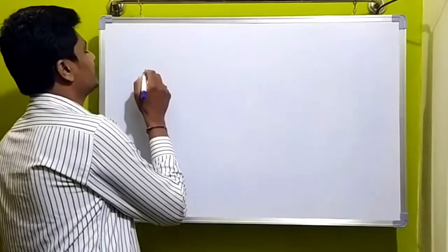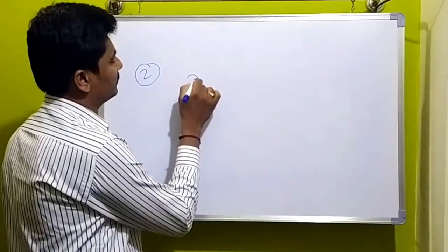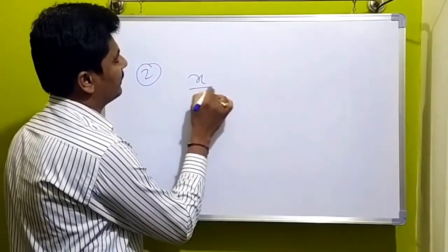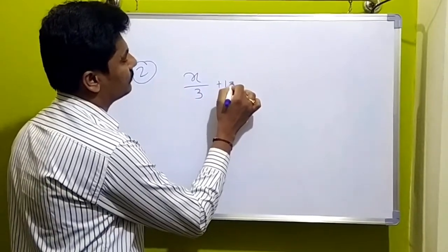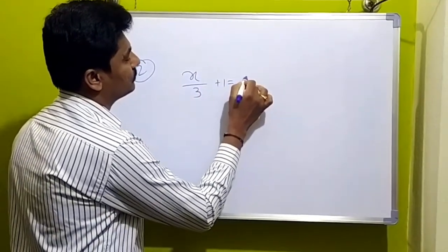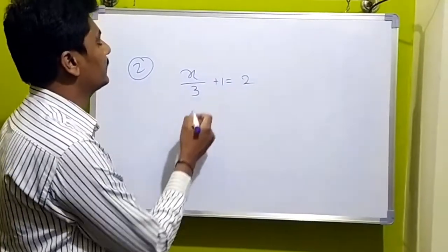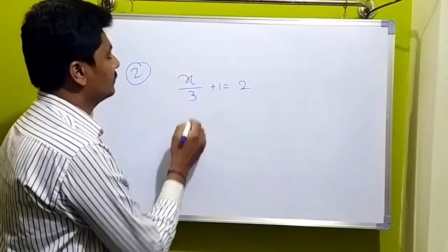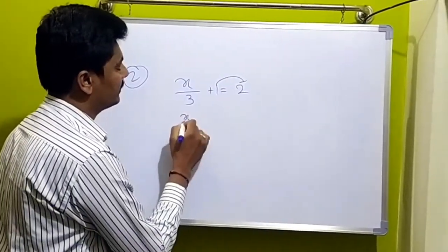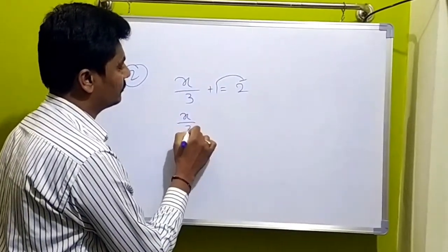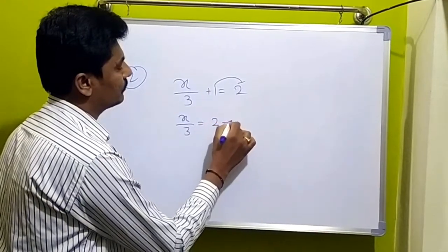So, the second example involves division. Now, x by 3 plus 1 is equal to 2. Solve for x. So, x by 3 is equal to minus 1.